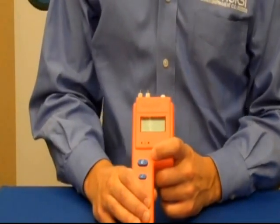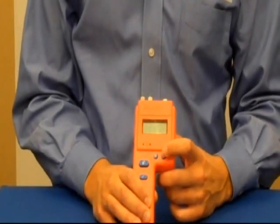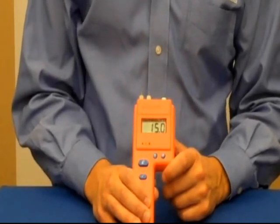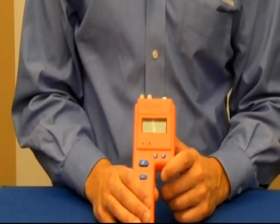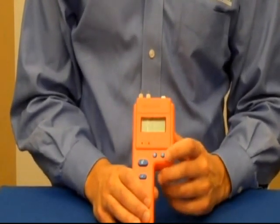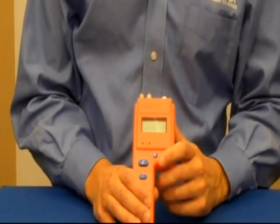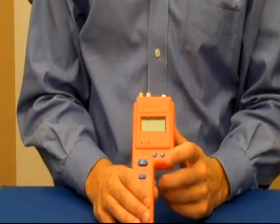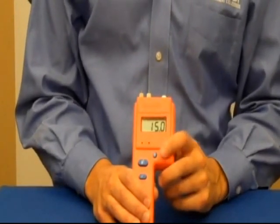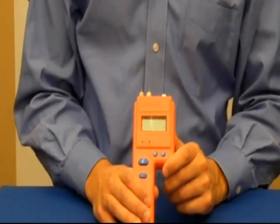Once you've set your scale to the material that you're testing, you can adjust the alarm by pressing the pound key. The alarm is user adjustable and it's a really great feature because it allows you to go into a job, identify an unaffected area or a dry standard, and then set the alarm to that value.